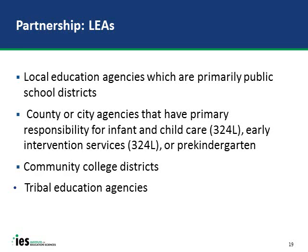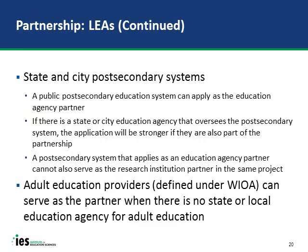Very small local education agencies with only one school can apply as a partner, but panel reviewers may consider such work less significant than projects involving multiple schools. State and local postsecondary systems can serve as the education agency partner; however, an individual campus cannot—the whole system must sign on, though the evaluation does not have to span the entire system. Additionally, a postsecondary system cannot study itself; an outside institution must be involved.